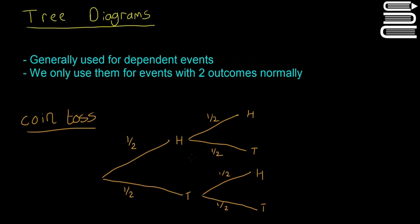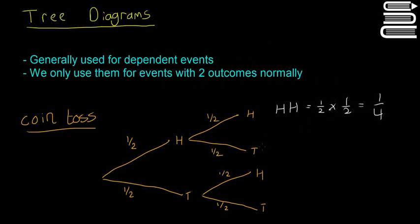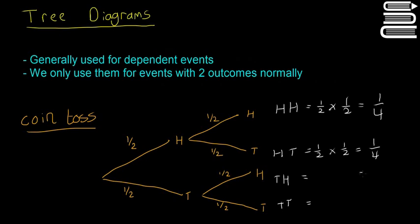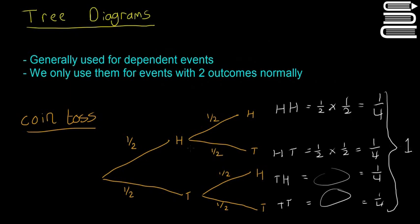For a coin toss this doesn't make too much sense since it's an independent event — I was just showing it because it's an easy example. The key idea is you can follow each branch to find the probability of the final outcome. For example, getting heads then heads means we follow this branch and then this branch, so H-H, and the probability is one half multiplied by one half — you multiply all the probabilities on the branches you follow. So that's one quarter. H-T, T-H, and T-T are each also one quarter. When you add them all up they should equal one.